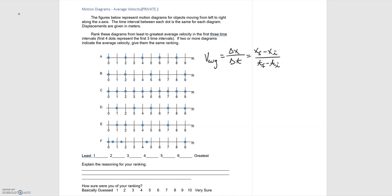It says to rank the average velocity from least to greatest in the first three time intervals, and the first four dots represent the first three time intervals. So in each diagram, we're going to mark the first three time intervals, and that's represented by the first four dots.